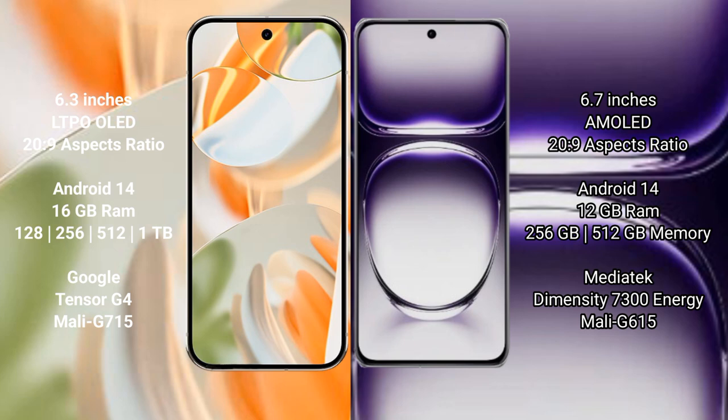The Oppo Reno 12 comes with 12GB RAM and 256GB or 512GB internal storage. It is powered by the MediaTek Dimensity 7030 processor with a Mali G615 GPU.